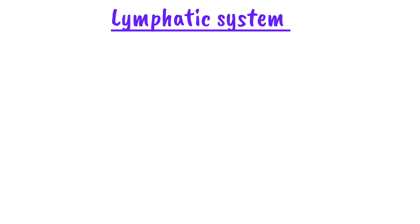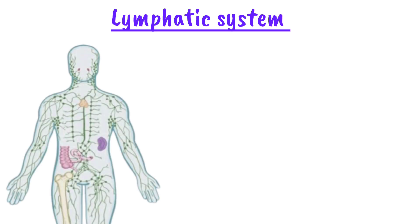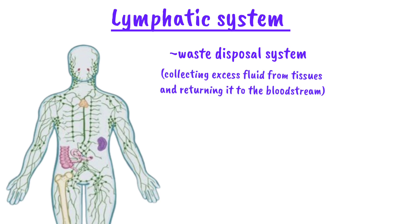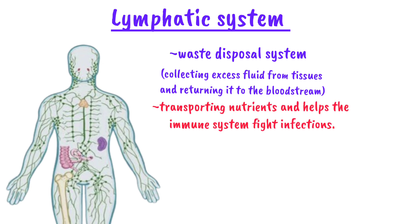In today's tutorial we are going to talk about the lymphatic system. The lymphatic system is one of the most important but often overlooked parts of the human body. It acts as a waste disposal system — it collects excessive fluid from tissues and returns it back into the bloodstream. It also plays a vital role in transporting nutrients and it helps the immune system fight infections.